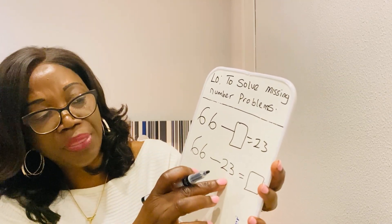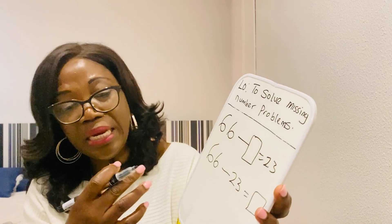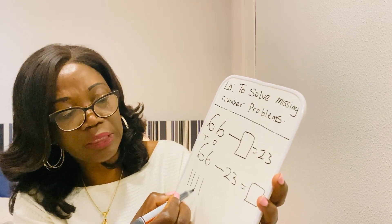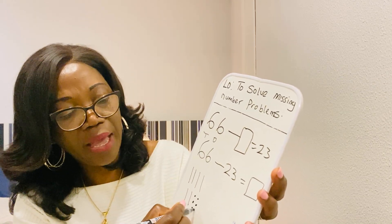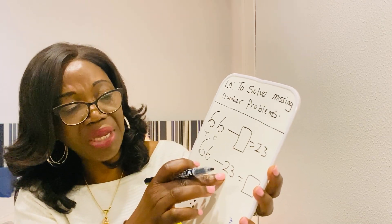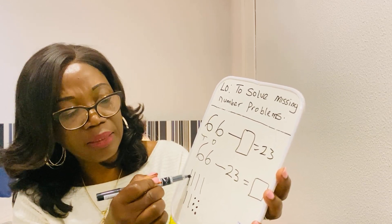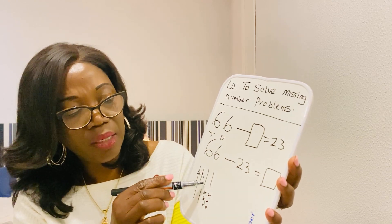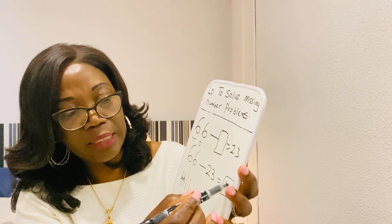So 66 take away something equals 23 becomes: 66 take away 23 equals something. Like we were doing earlier, you just draw your tens and ones. So 6 tens: 10, 20, 30, 40, 50, 60. And how many ones? 1, 2, 3, 4, 5, 6 — six ones. We are not going to draw 23 because we don't need to. So we're going to take 23 away from 66. We take 2 tens — cross it out: 20. And how many ones? 1, 2, 3. What do we have left? 10, 20, 30, 40, 41, 42, 43. So 43 is our answer.